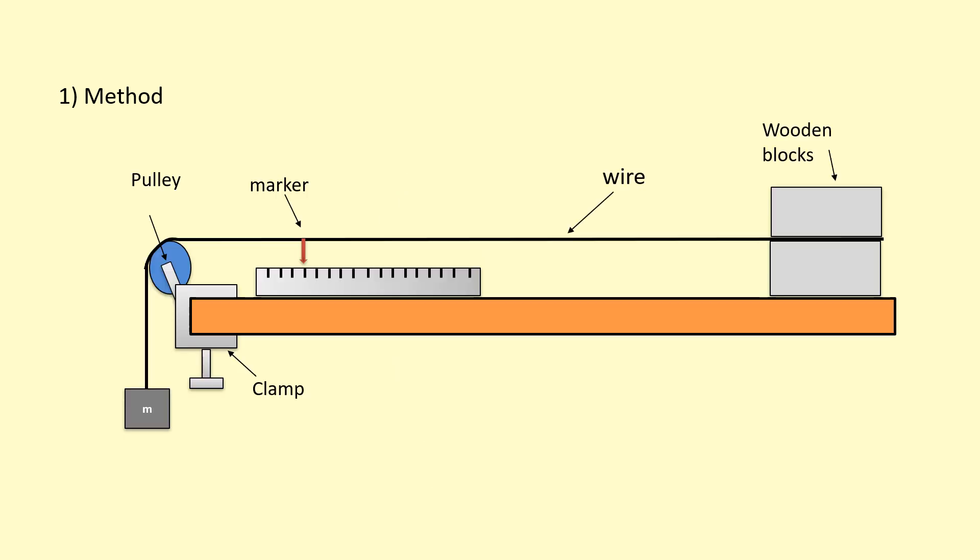I'll be using this: you've got a table and a wire extended across the table, locked between some wooden blocks. The other end of the wire is going over a pulley with a mass hanging on the edge. The pulley is being clamped down. You've got a ruler and then you've got a marker.